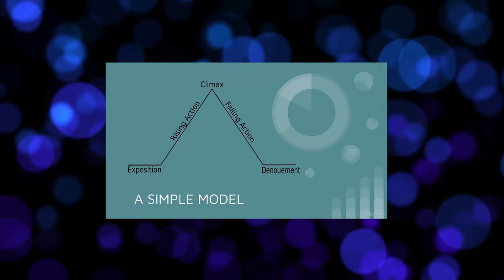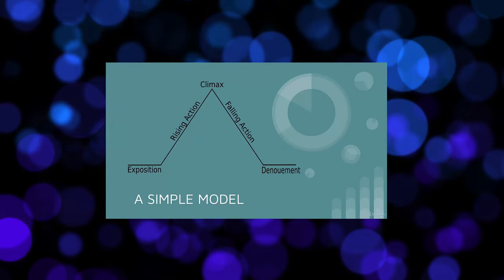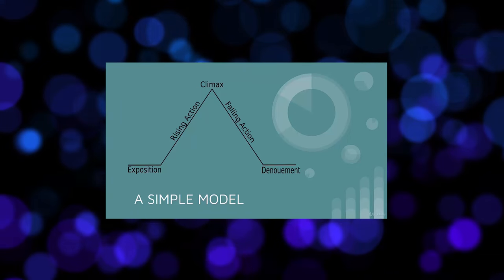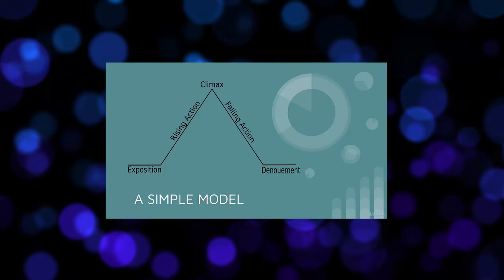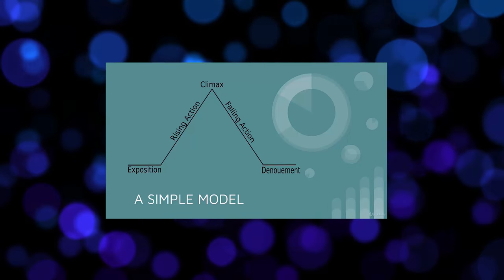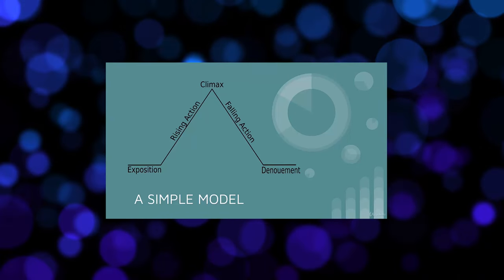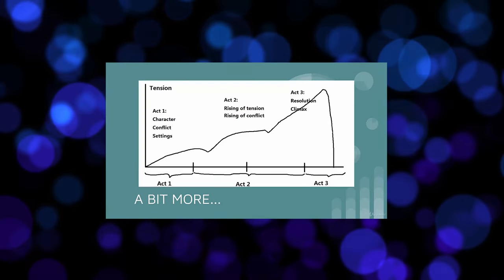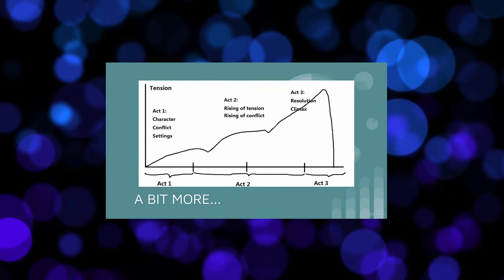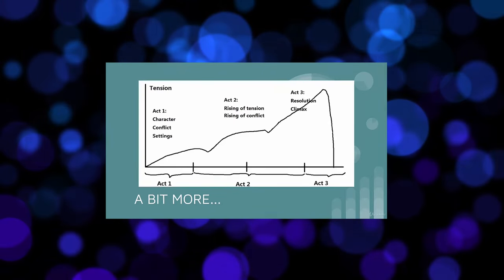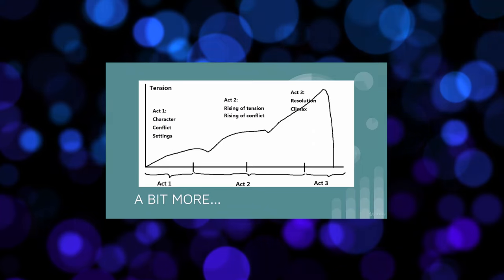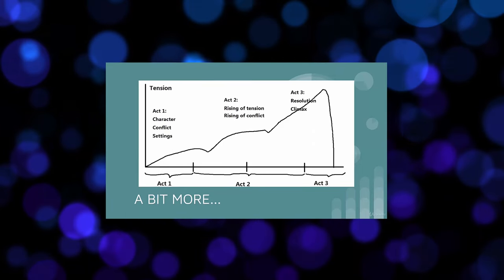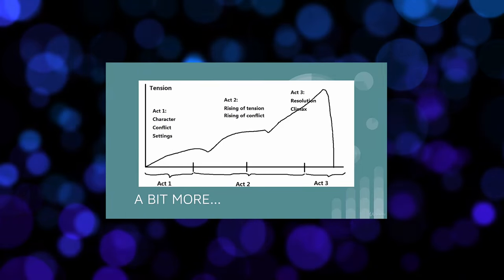So this is a really simple three act story: exposition, rising action leading to a climax, and falling action leading to a denouement or resolution. We've got a little bit more here — this shows us again the three act structure: act one, act two, act three.